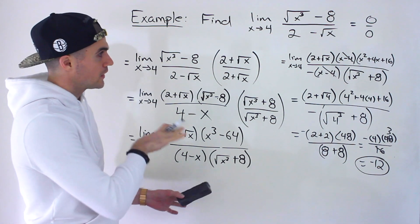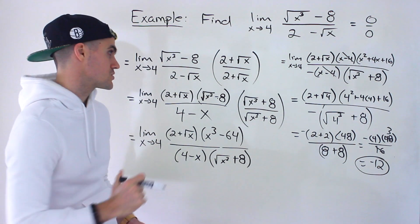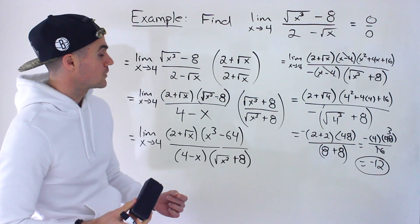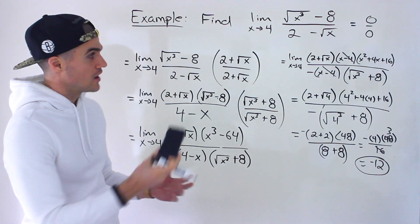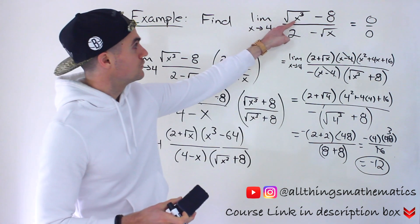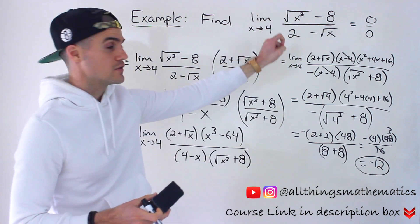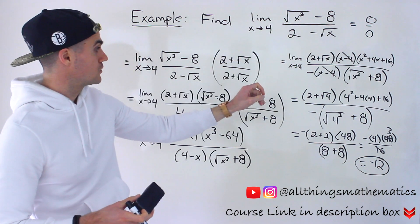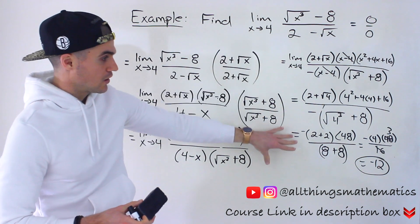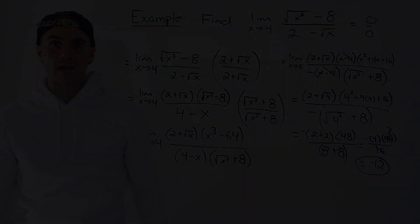So quite a bit of algebra here. A student sent this limit to me, so I just wanted to go over it — a little more practice dealing with double rationalization, and to not get confused with x to the power of 3 that's under the square root. Do the double rationalization, be careful with your algebra. Negative 12 is the final answer.